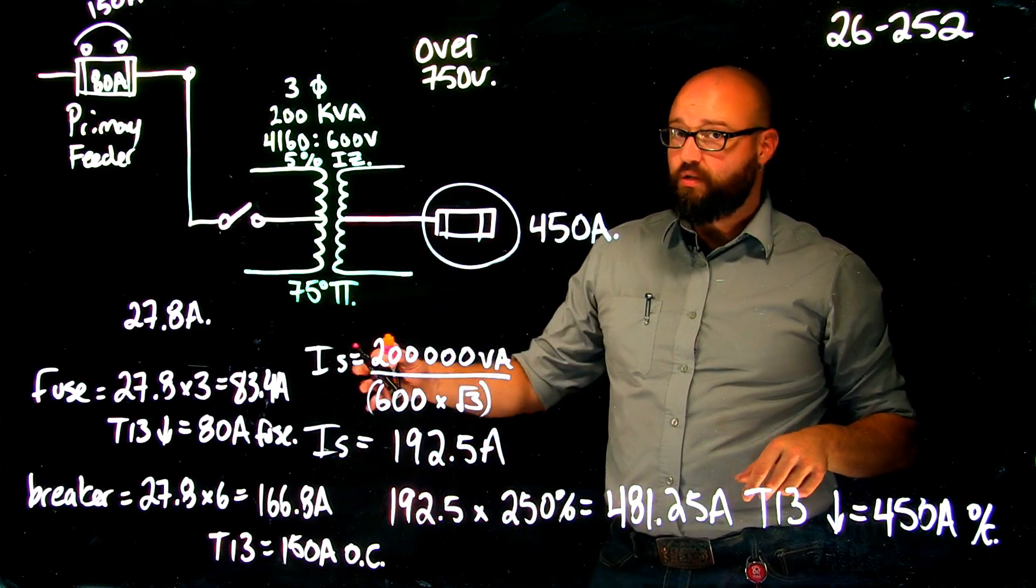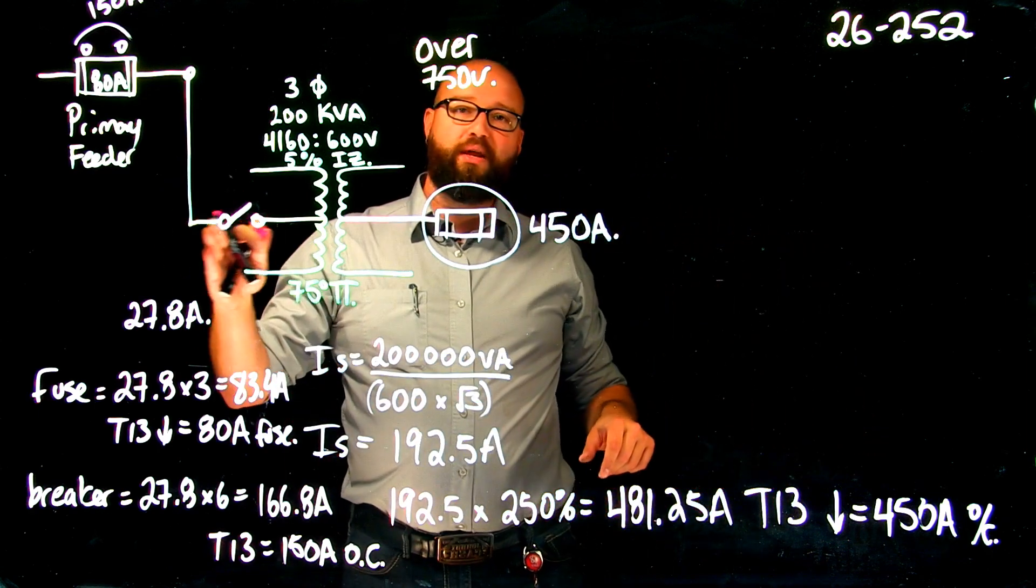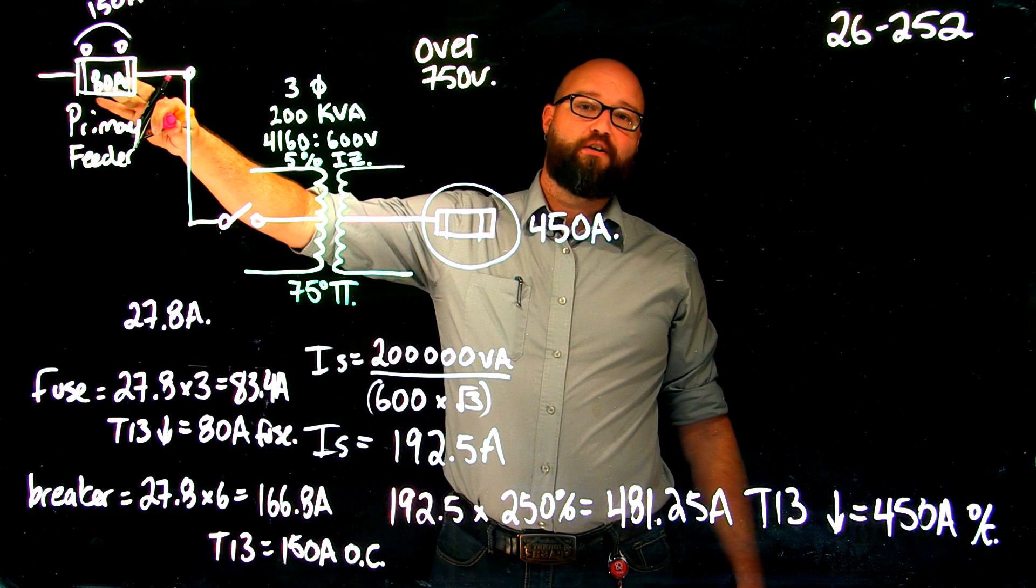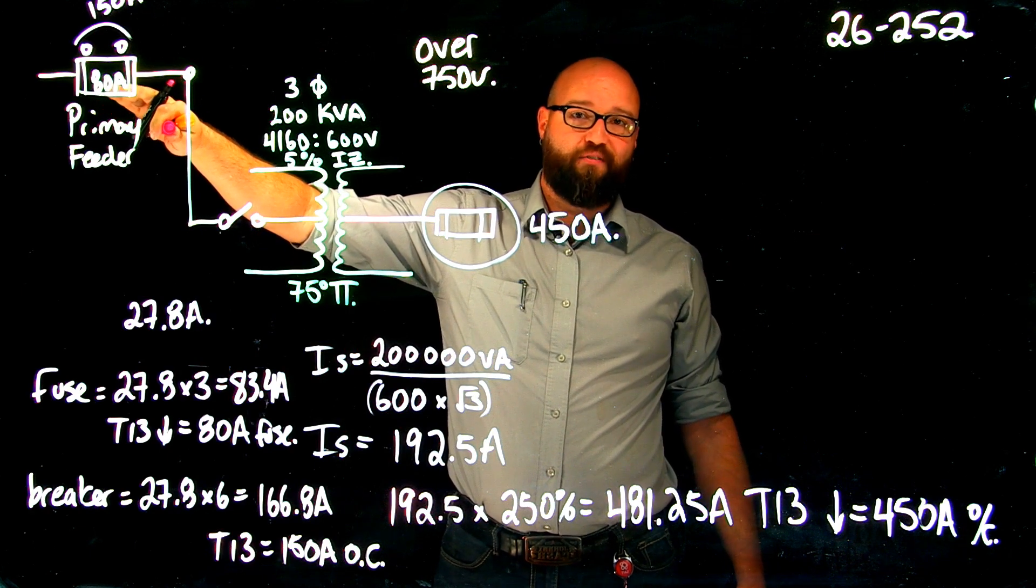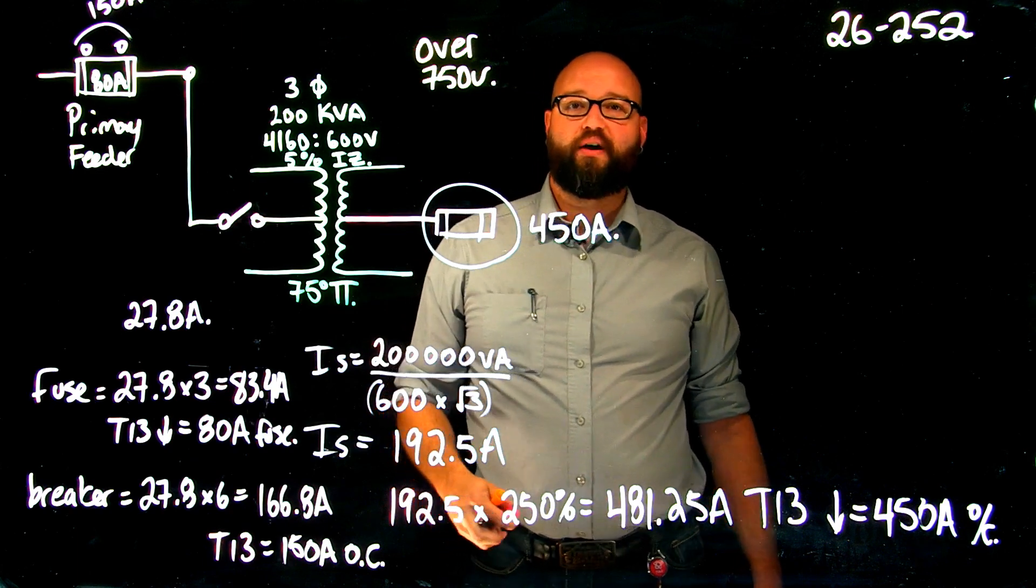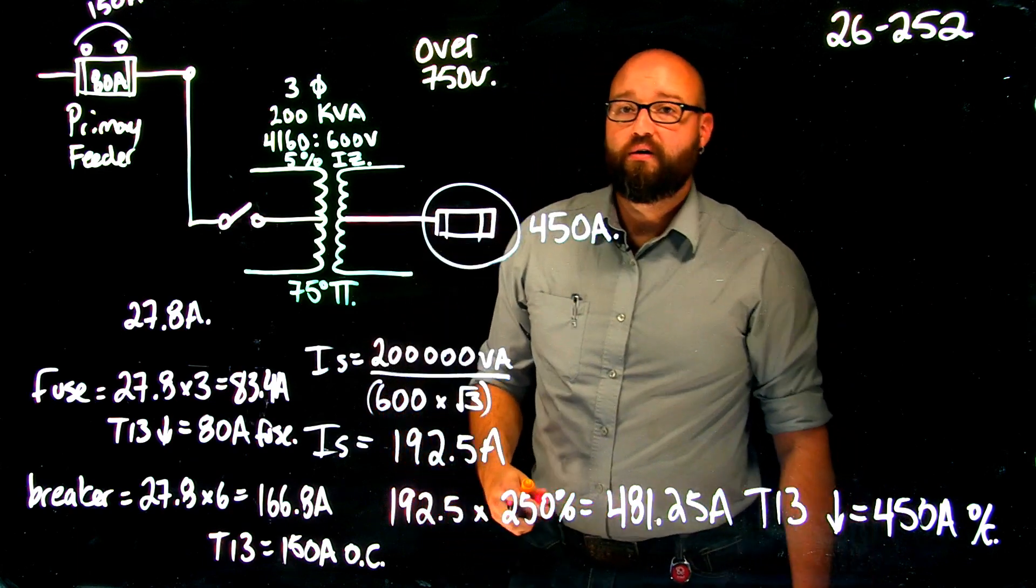Either one of those combined with this 450 amp secondary protection would allow me to omit primary overcurrent. Because I'm omitting primary overcurrent, I must select my primary feeder overcurrent based off the values in table 50, and I must have a secondary overcurrent that is selected based off the values in table 50 as well.